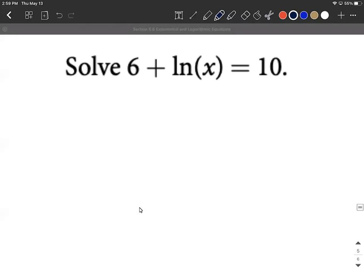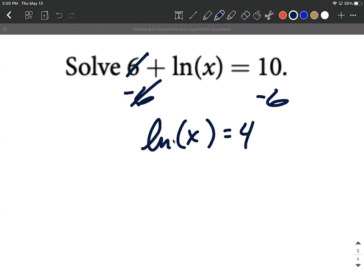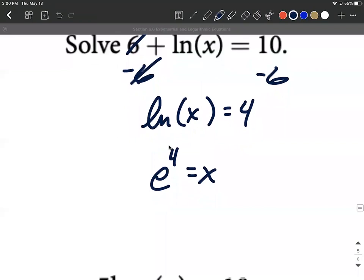What about 6 plus natural log of x equals 10? Well, what you want to do to use this definition is isolate the logarithm first, get that on one side all by itself. So we've got to move that 6 to the other side. Let's subtract 6 from both sides, therefore getting the natural log of x equals 4. Again this means log base e. So line up the base, it's going to be e raised to the fourth power equals x. Again we could get an approximation but we like exact solutions.